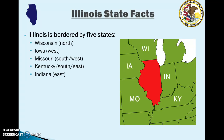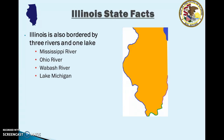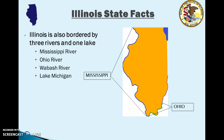In addition to those five states, Illinois is also bordered by three rivers and one lake. The Mississippi River, outlined in blue, runs down Illinois's entire western border. The Ohio River, shown in green, runs along the southern tip of Illinois and some of the southeastern border. The Wabash River, outlined in purple, helps create the border between Illinois and Indiana for about 25% of Illinois's eastern border. And at the very top right corner, Lake Michigan — one of the Great Lakes — gives Illinois about 60 miles of shoreline on its northeastern border.